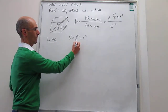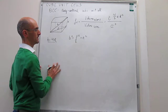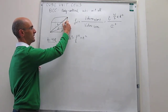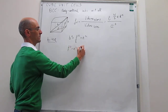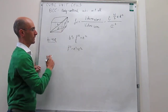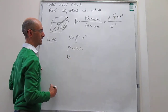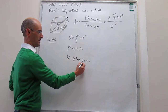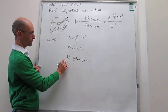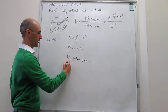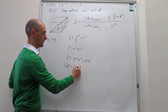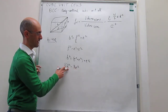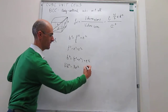Since B equals 4R, we have 16R² = 3E², which allows us to calculate the relationship between the edge and the radius of the atom. That relationship is: E = (16/3)^(1/2) · R.